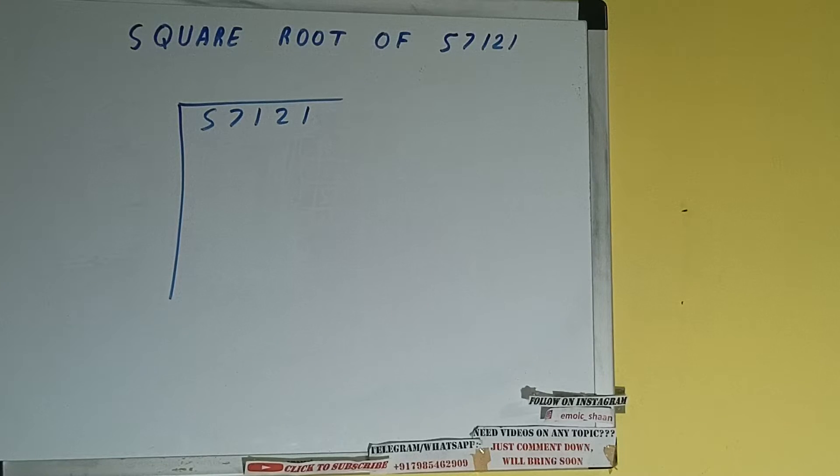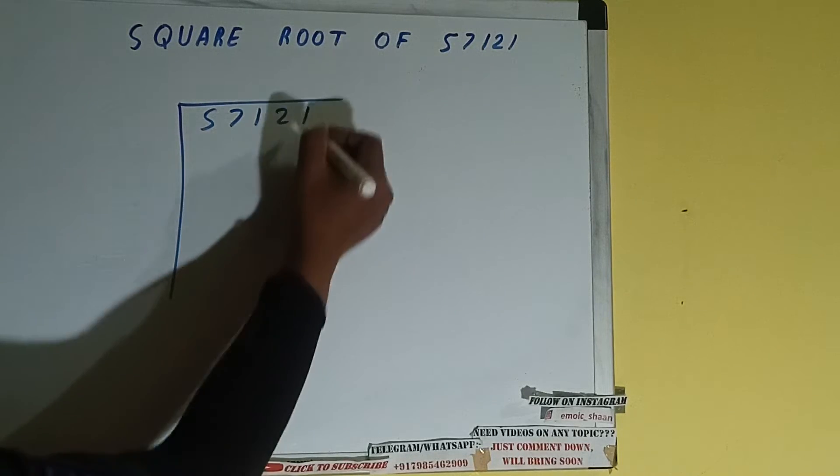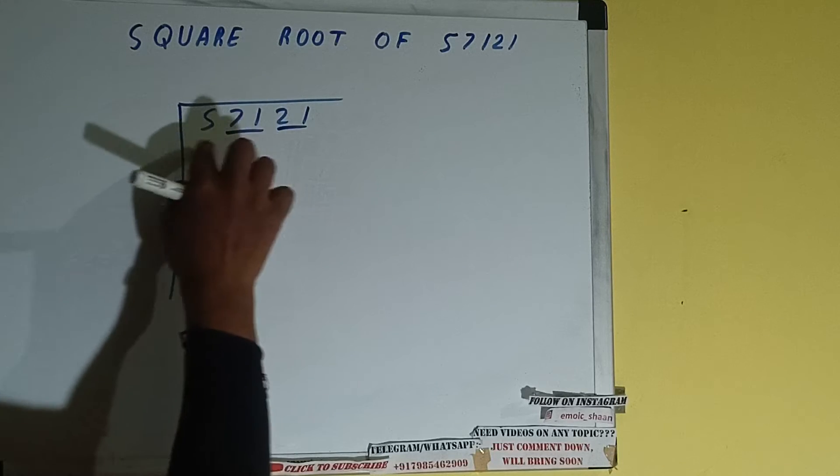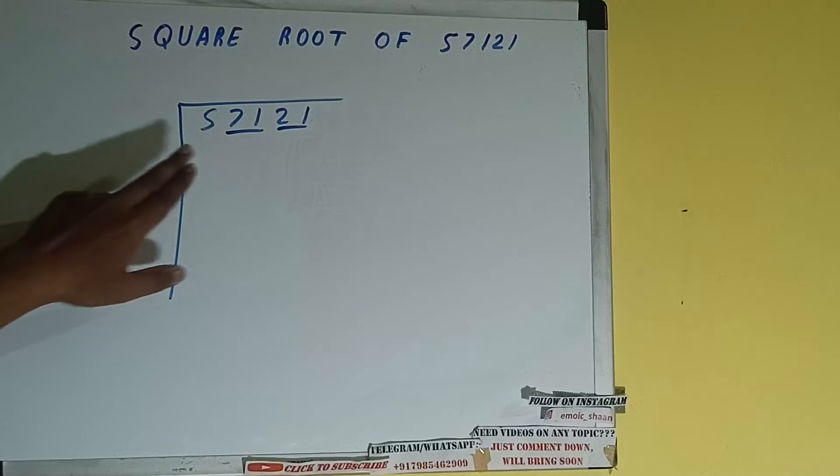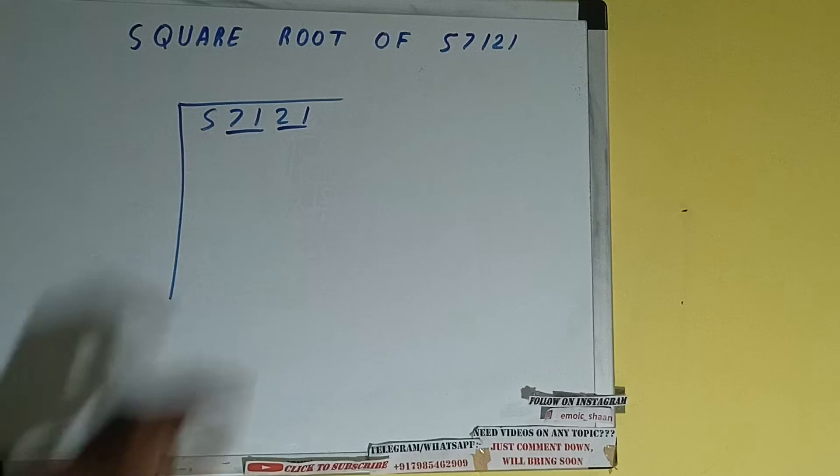Next thing we need to do is form pairs from the right hand side. So one pair will be this, one pair will be this, and this five will be left out. So first we'll divide this five and then we'll bring down the pairs.